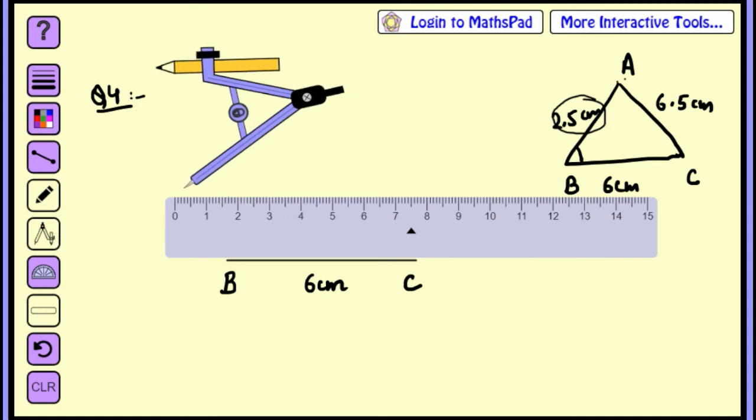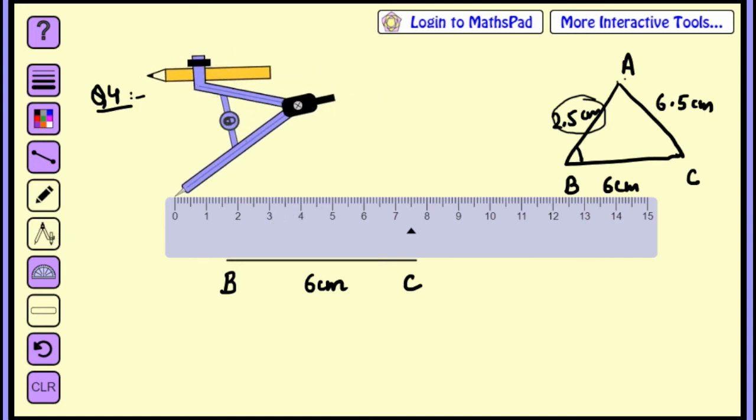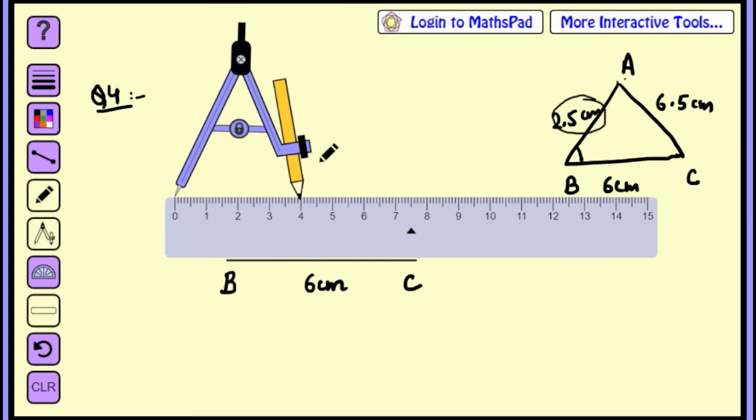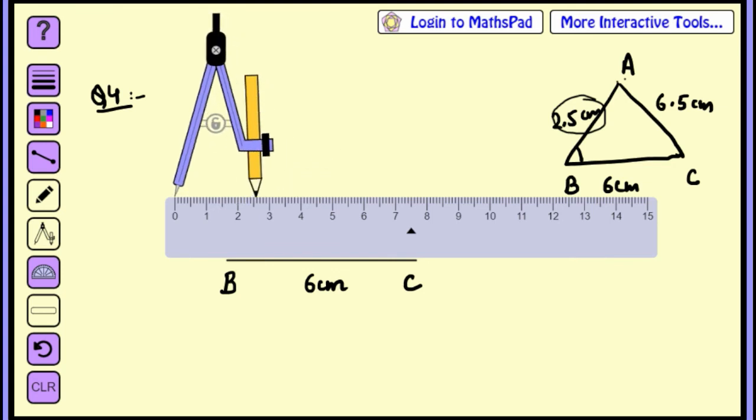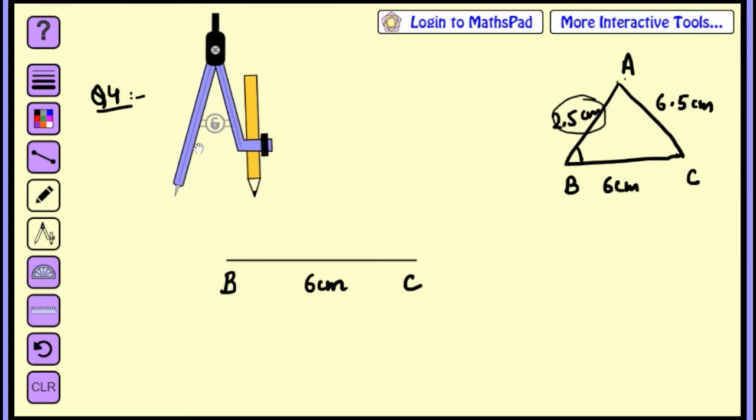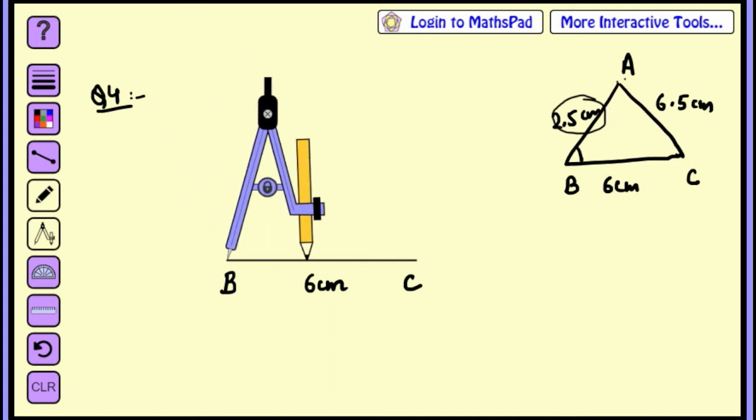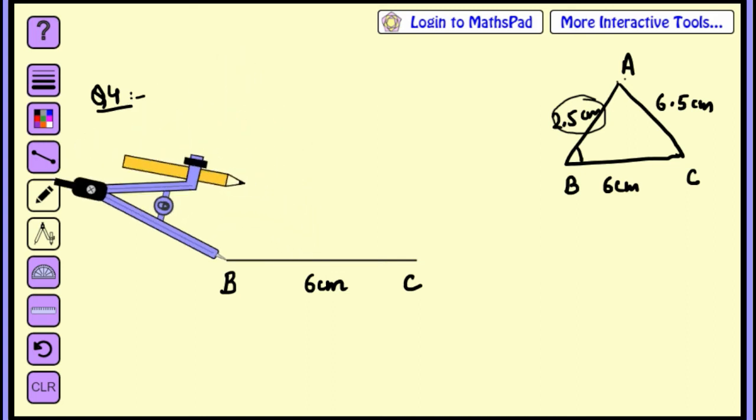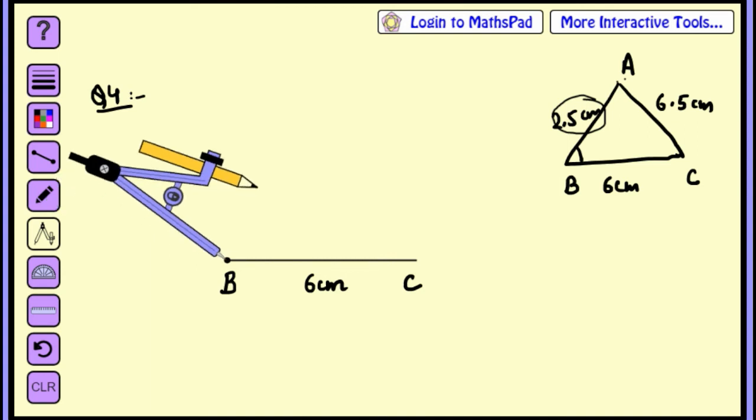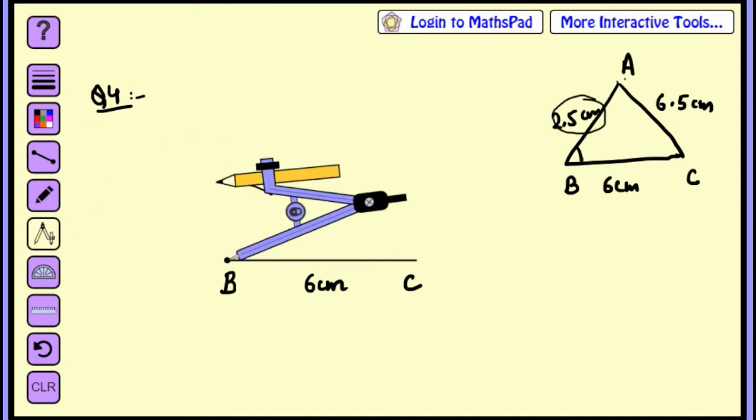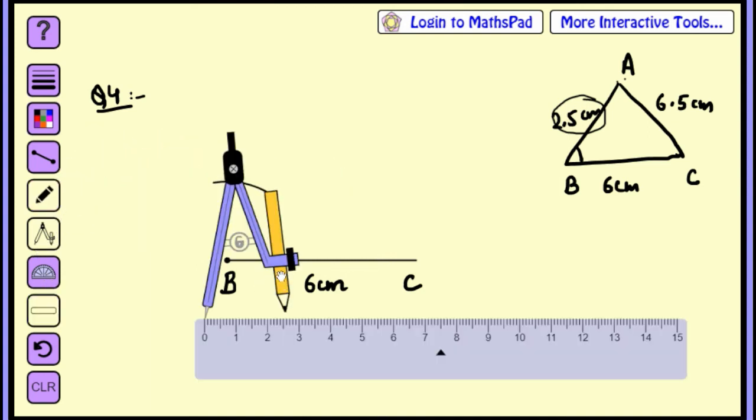So take your compass, open a distance of 2.5cm in your compass. And place the needle of compass at point B and draw an arc of length 2.5cm.